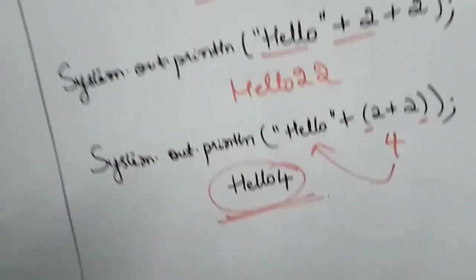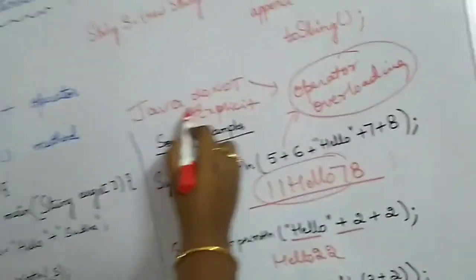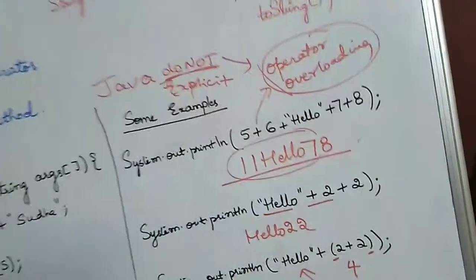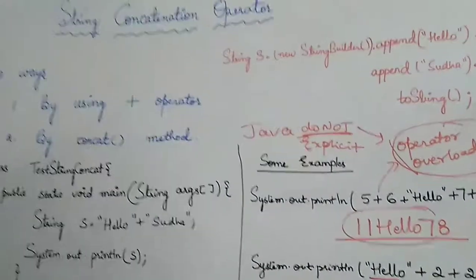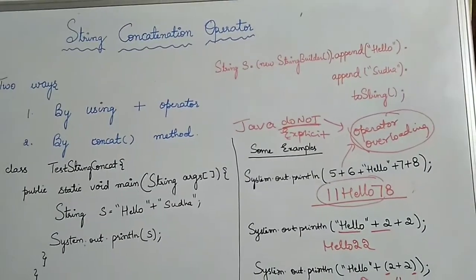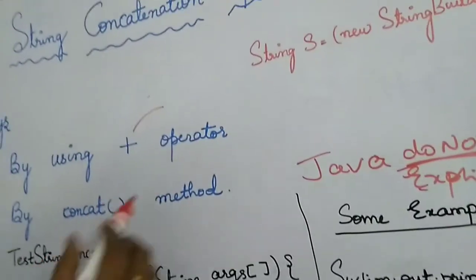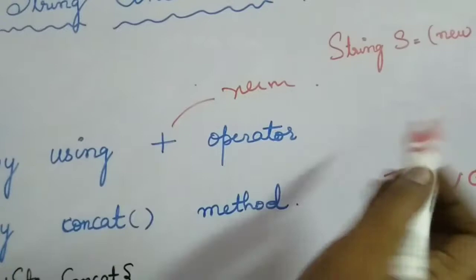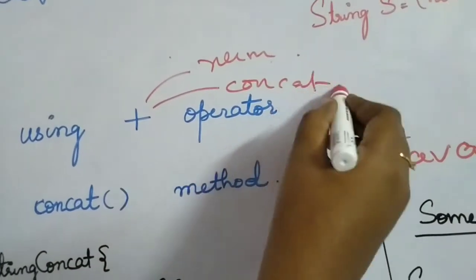One important thing we noted is that Java does not support explicit operator overloading, meaning the programmer cannot operator overload. But implicitly there is one operator which is overloaded: plus. This plus can act like a numerical binary operator, a unary operator, and also as a concatenation operator.